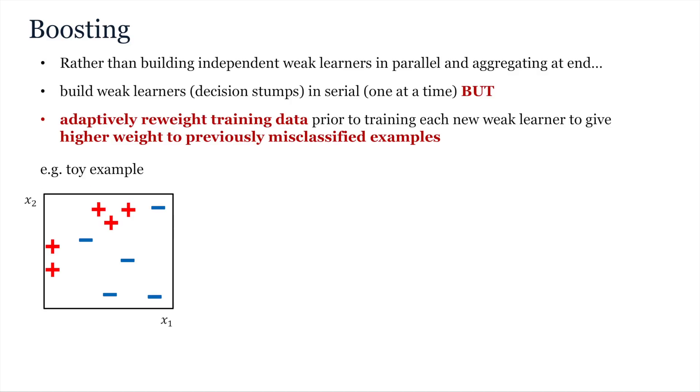In this video we move on to the family of sequential homogeneous learning methods known as boosting. There are quite a number of different boosting algorithms but all share the same key idea that weak learners, for example stumps or trees, are built one after another in serial and that at each iteration, examples that were misclassified in previous iterations are given higher weight or greater importance for training subsequent learners.